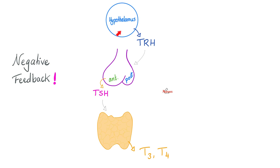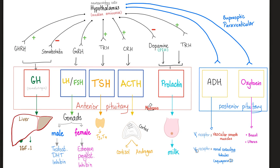Here is an example of how the hypothalamus stimulates the anterior pituitary to stimulate the thyroid. Hypothalamus secretes TRH, which goes to the anterior pituitary to secrete TSH, which goes to the thyroid to secrete thyroid hormone. Hypothalamus also secretes GnRH, which goes to the anterior pituitary to secrete growth hormone, which goes to the liver to secrete IGF-1. If you want to inhibit growth hormone, somatostatin is your man.